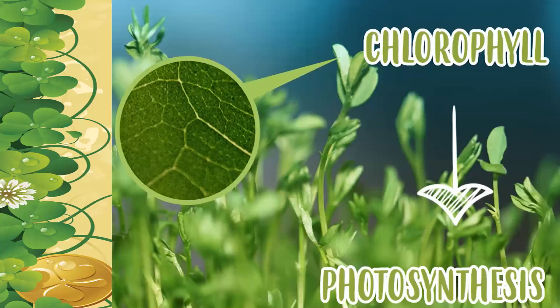Most of the plants we see around are green in color — the leaves are green and most of the plant is green, except a few plants which are not green. Why is this, and how is this green color present in them? The substance known as chlorophyll is present in plants, which helps maintain their green color. That is why they have the green color — because there is a substance in them known as chlorophyll.